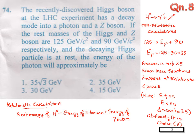Q8. The recently discovered Higgs boson at LHC experiment has a decay mode into a photon and a Z boson. If the rest mass of the Higgs boson and Z boson are 125 GeV and 90 GeV respectively, and the decaying Higgs boson particle is at rest, the energy of the photon will be approximately.